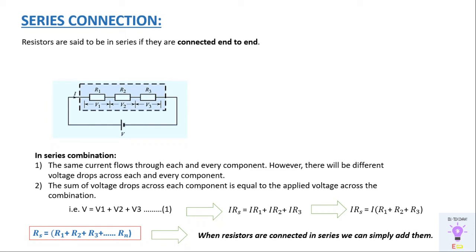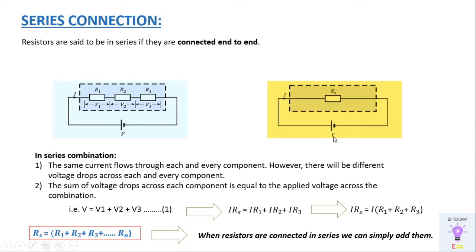Once we add the resistances, we represent it in an equivalent form. R1, R2, R3 in series give an equivalent resistance RS. V is the supply voltage and I is the current, which remains the same throughout the series branch. Two points to remember: the current in a series combination remains the same, and the sum of voltages across each resistor equals the supplied voltage V.